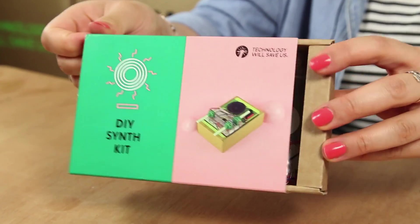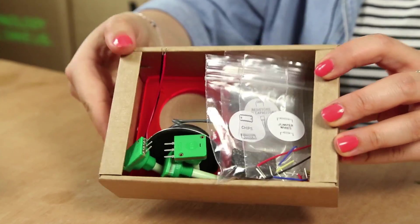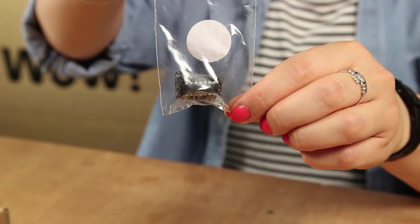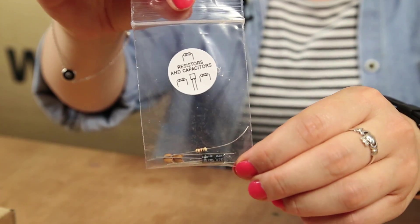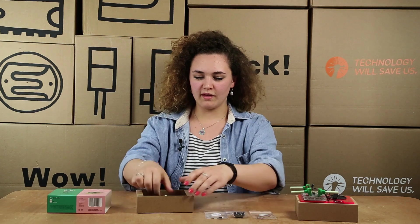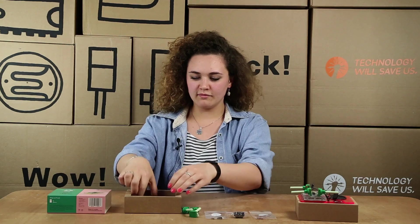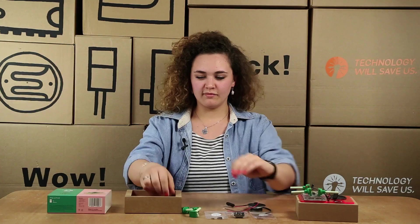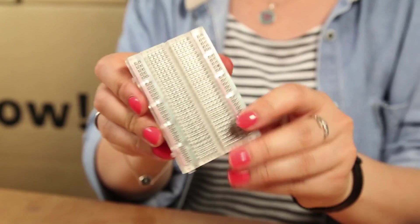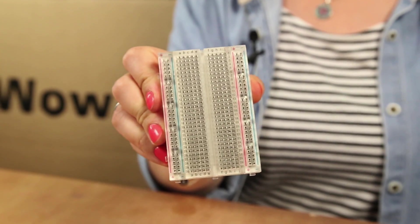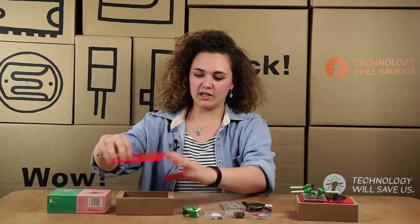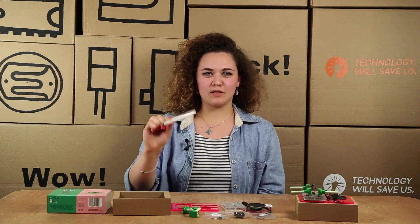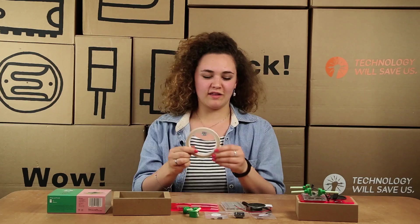So if we just have a look inside, it comes with color coded jumper wires, your IC chip, capacitors and your resistors, three potentiometers, speaker, battery clip, double-sided sticky tape, a breadboard and then your two pieces of acrylic. So one there and then another one for your battery later on. And also you need some double-sided sticky tape to stick the acrylic on at the end.